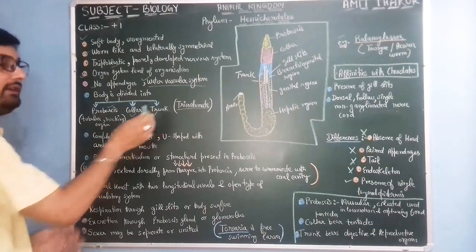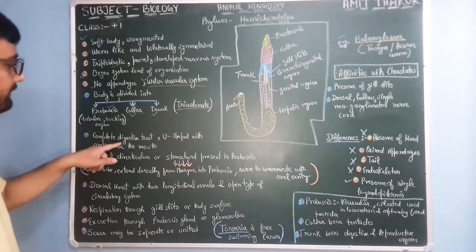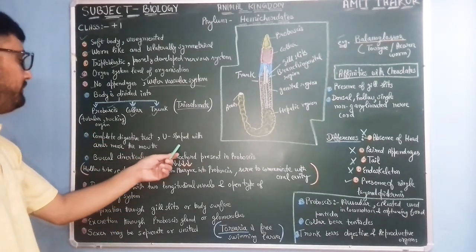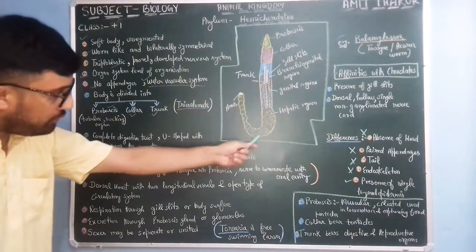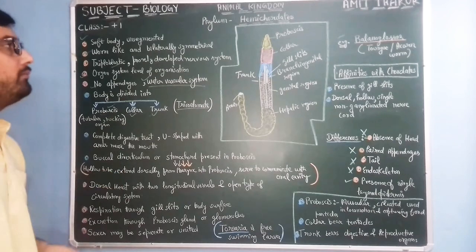Proboscis, collar, and trunk are the three regions. There is a complete digestive tract, U-shaped tract, with anus and mouth.